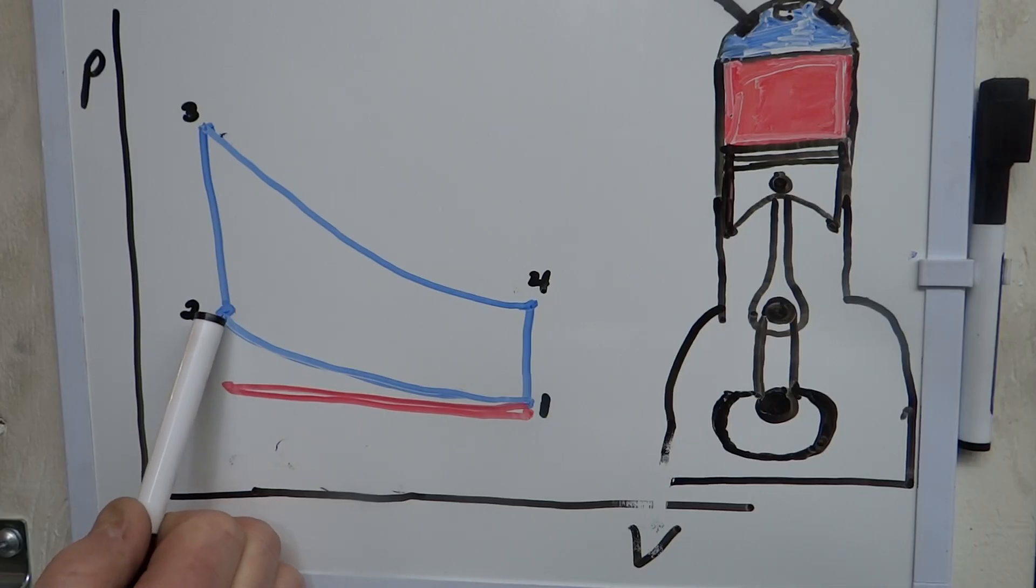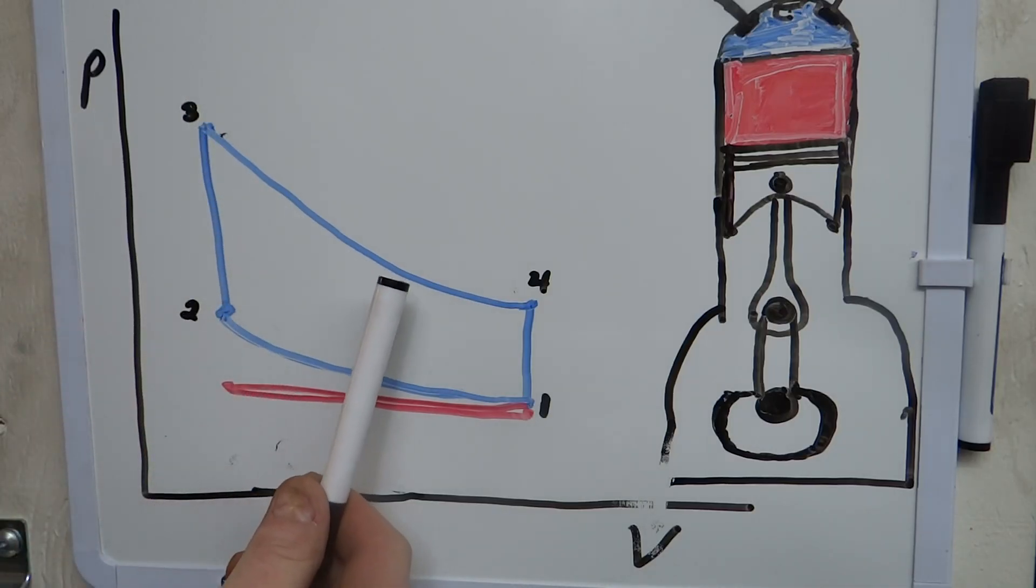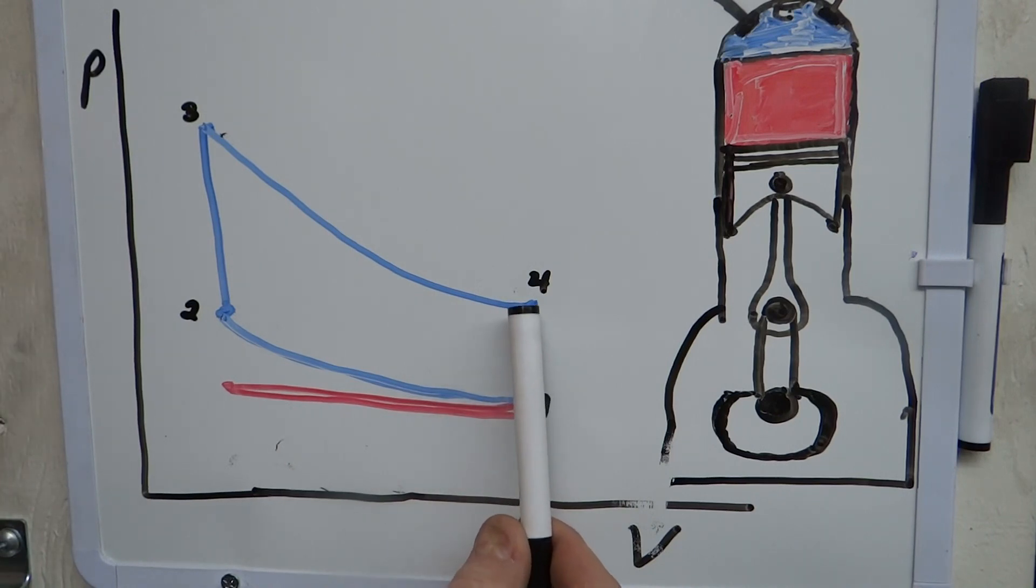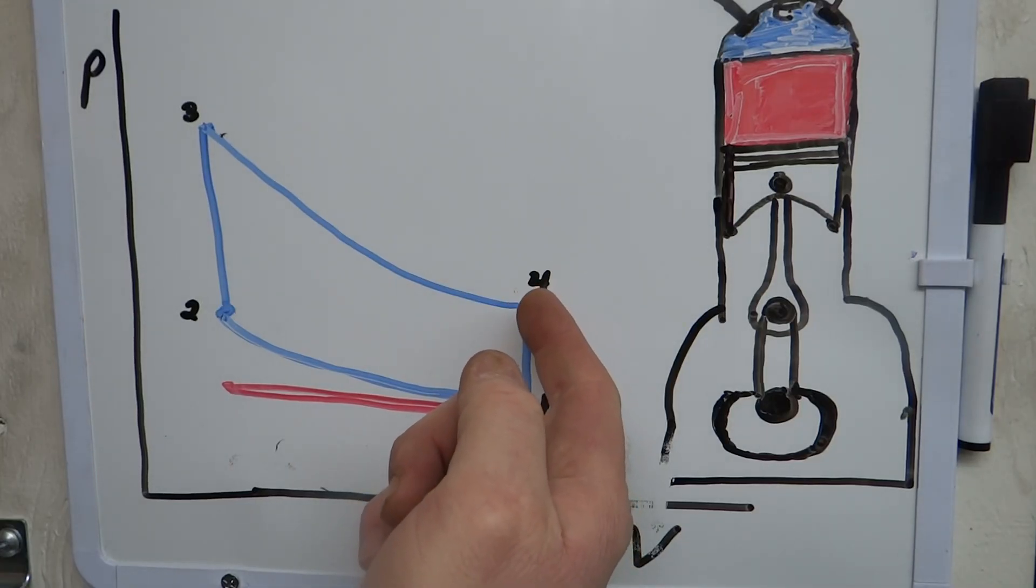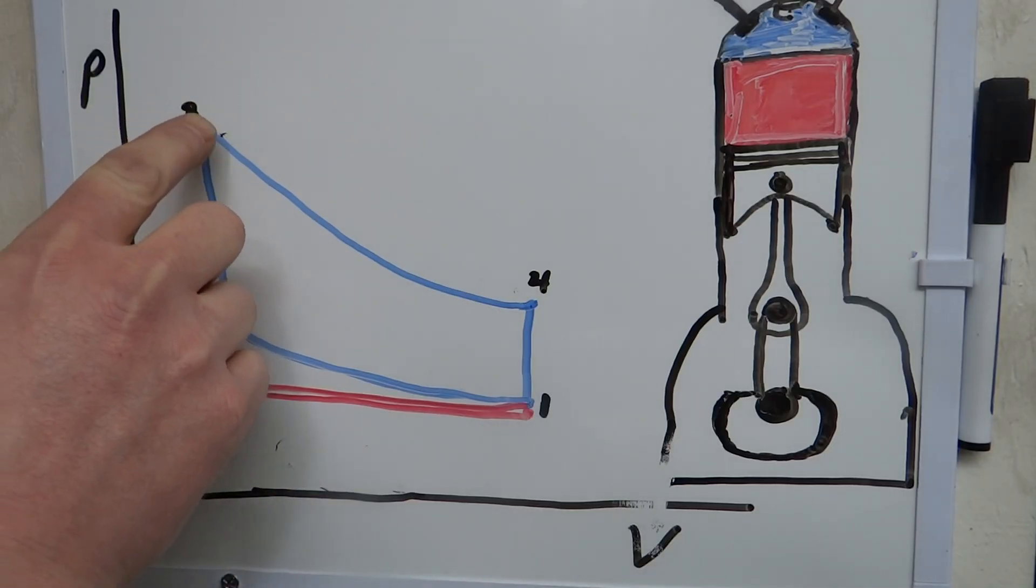And then what happens on this diagram is the spark plug goes off, you burn the fuel, and then all that energy gets released and the pressure goes up. So now we're at three, we're at the beginning of the power stroke. Now the piston's on its way back down. The volume is increasing because the piston's moving back down and the pressure's going down correspondingly. And then at four, what happens is the exhaust valve opens. So basically here, we're at the bottom of the power stroke. The exhaust valve opens and the pressure drops down back to where it was before. And that's just kind of an idealization about the way this works. So compression, combustion, power stroke, exhaust.